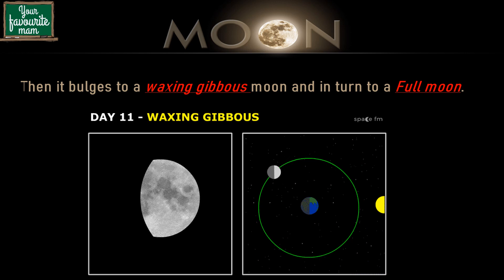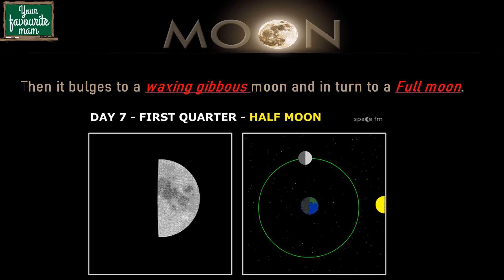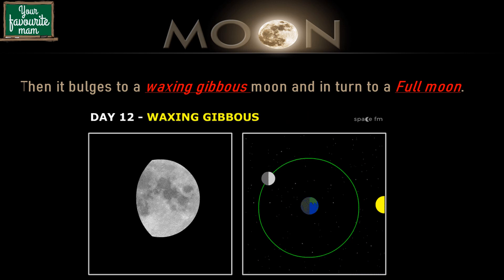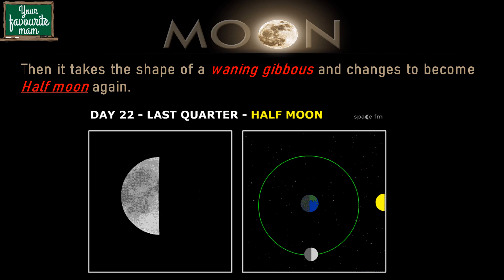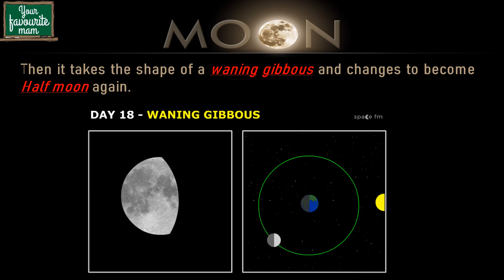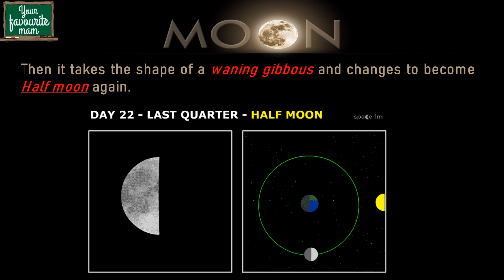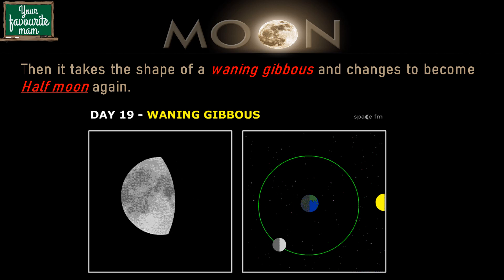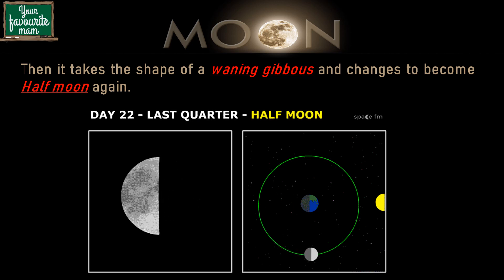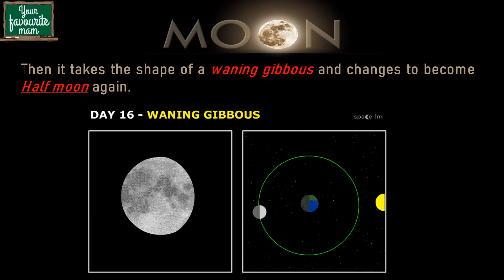Then comes the phase of waxing gibbous, where the moon is slightly bigger than the half moon but slightly less than the full moon. It further goes on to turn into a full moon. After the full moon, the moon takes the phase of waning gibbous, which is a phase between half moon and full moon. Waning means it is getting smaller. Then from the waning gibbous phase, it goes on to the third quarter. We see the third quarter moon as the half moon too.